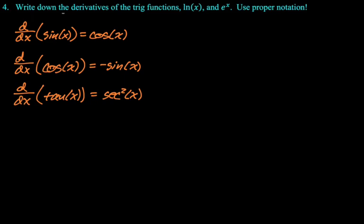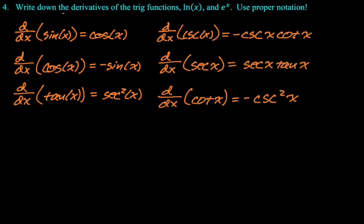So one thing you will notice is that the derivative of co functions, functions that start with co, have negative signs in front of them. So the derivative of cosine is negative sine. Alright, now we need the derivatives of the other three. So the derivative of cosecant, that's a co function, has negative. So it's negative cosecant cotangent. The derivative of secant is secant tangent. The derivative of cotangent is negative cosecant squared.